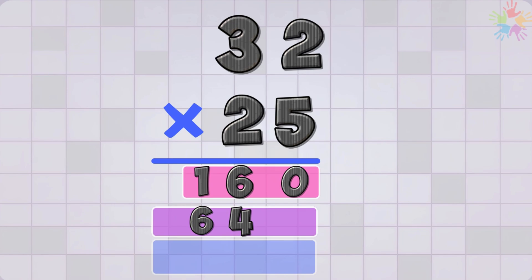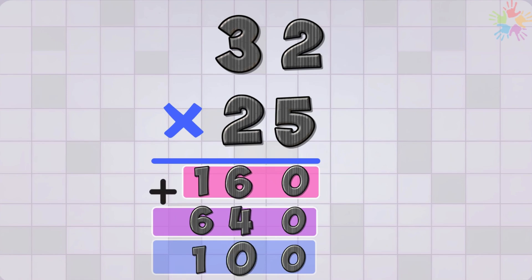But hold on. Don't forget to place a 0 beneath the 0 in the first row. Let's add. 0 plus 0 equals 0. 6 plus 4 equals 10. Write down 0 and carry 1. 1 plus 1 plus 6 equals 8. So in total we have 800.